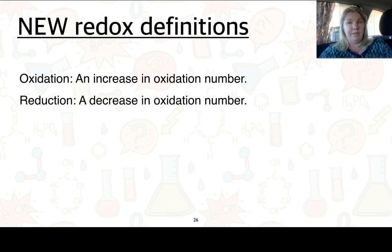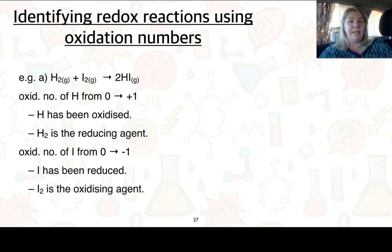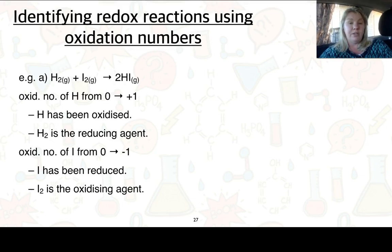We also have a couple of new redox definitions. Oxidation is an increase in the oxidation number and reduction can be classed as a decrease in oxidation number. To identify a redox reaction using this, look at the equation: H2 plus I2 goes to 2HI. The oxidation number of hydrogen has gone from 0 on the left to +1 on the right, so hydrogen has been oxidized and H2 is therefore the reducing agent. Iodine has gone from 0 on the left to −1 on the right, so it has been reduced and I2 is the oxidizing agent.